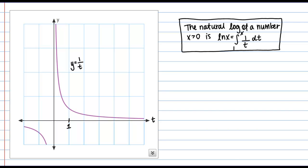What if x is less than 1? Let's consider a particular example and say that x is 1 half, for instance. Well, in this case, the natural log of x as given by this definite integral is actually going to be negative. Why is that?